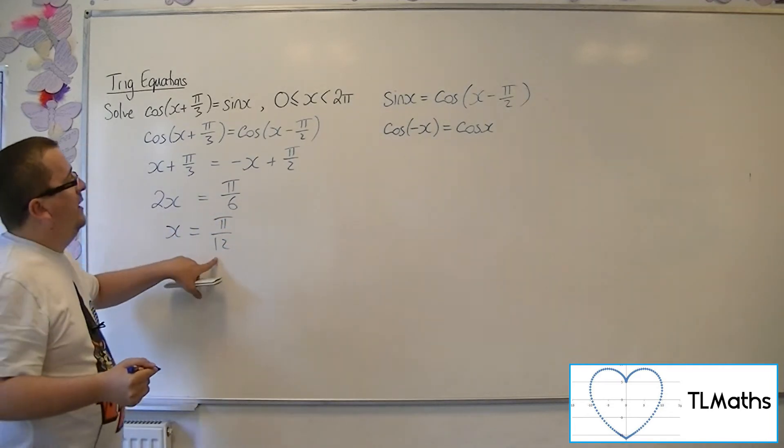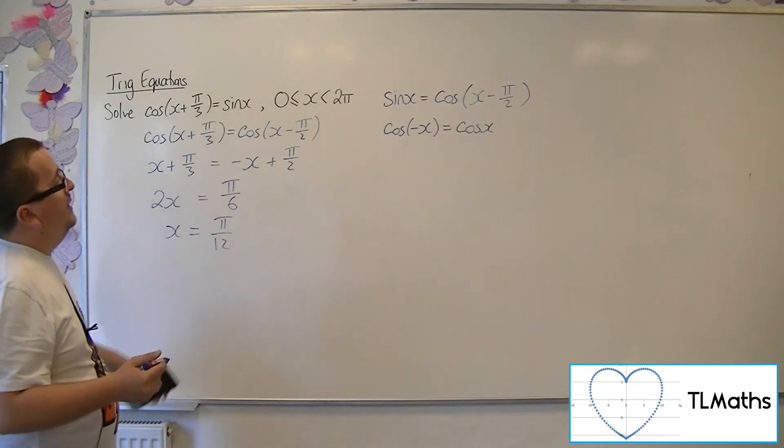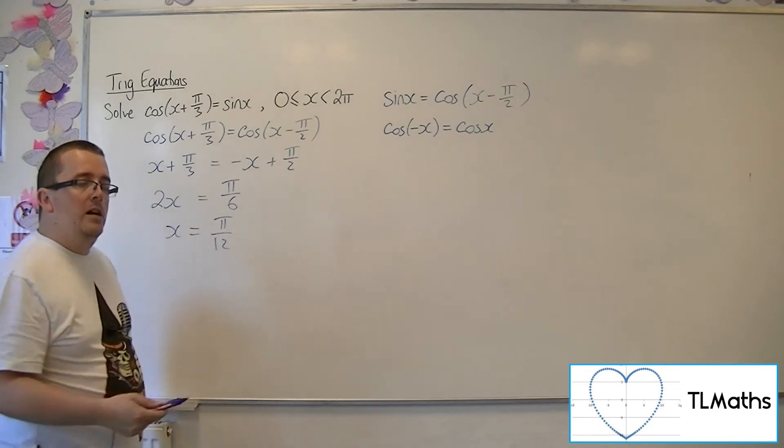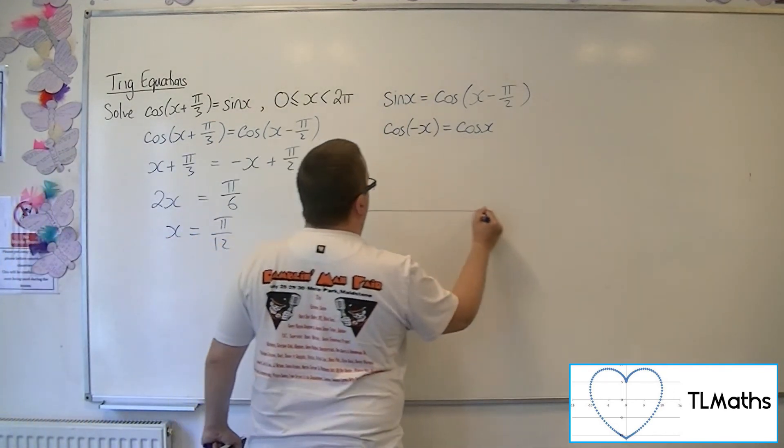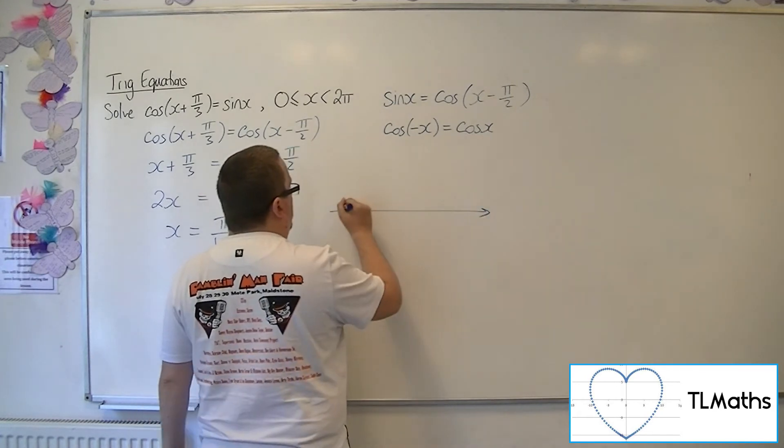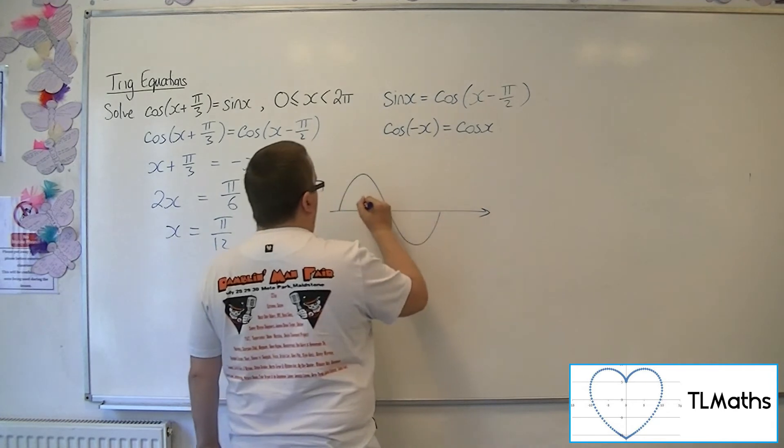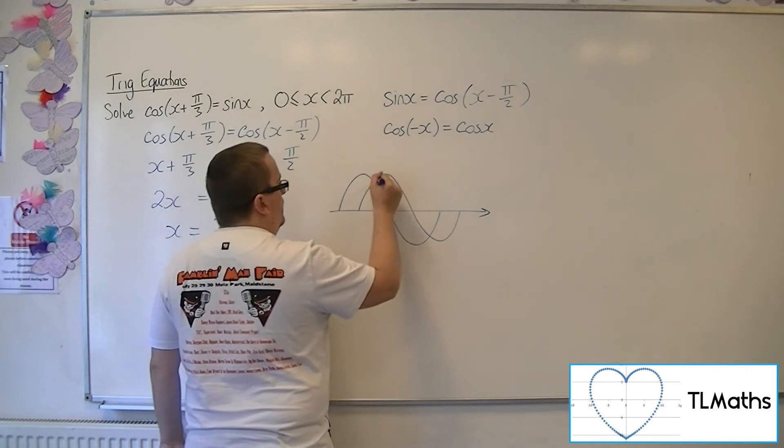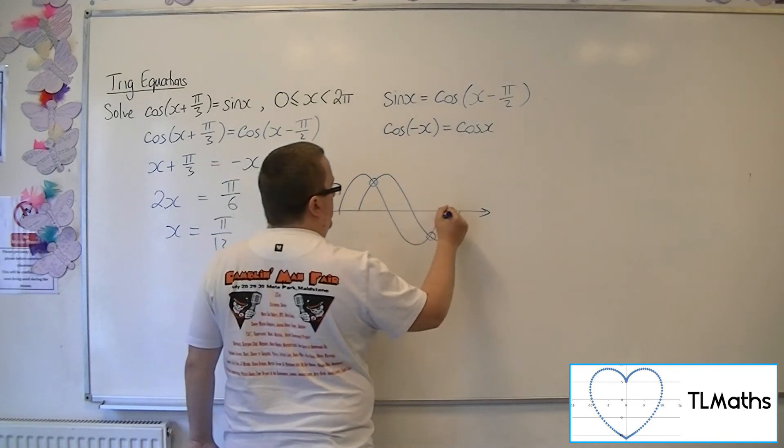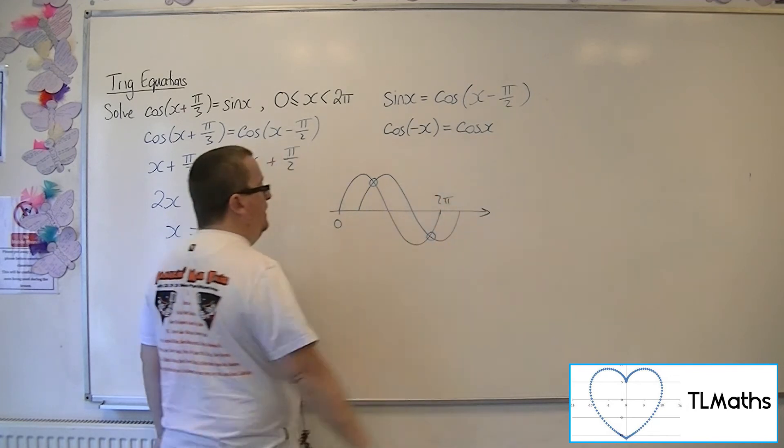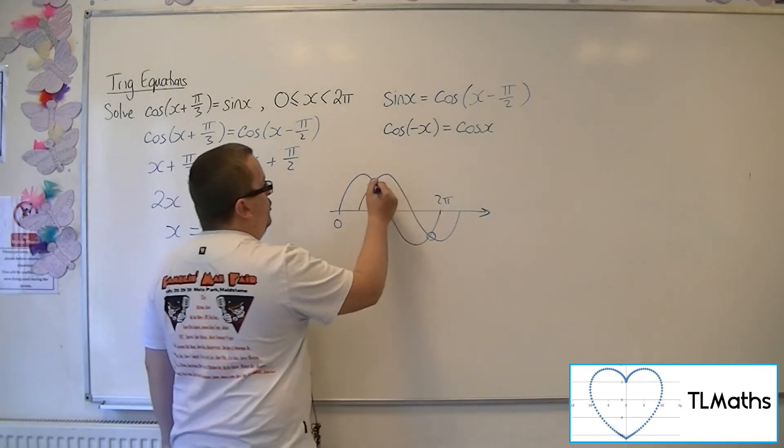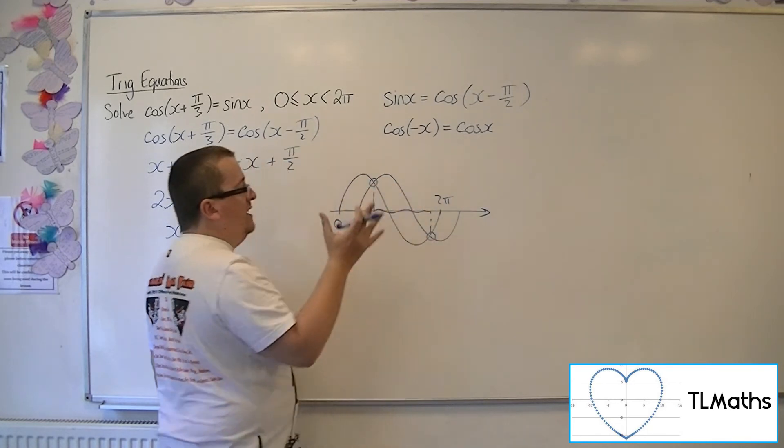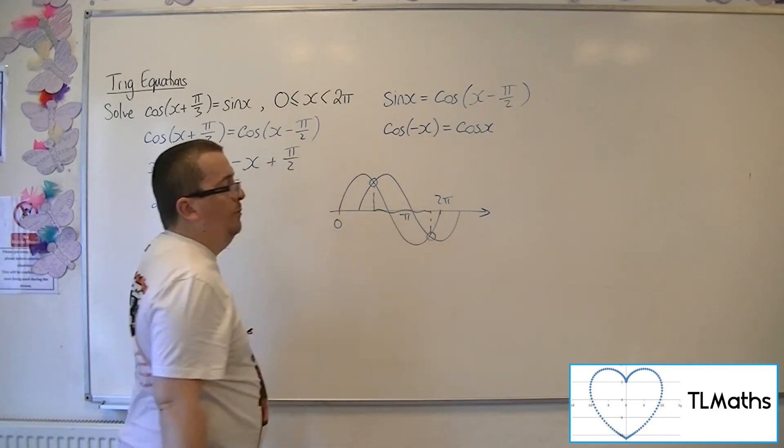Now that's not the only solution between 0 and 2 pi, because you've got two cosine curves effectively. If I just draw one next to the other, then there will be two intersection points between 0 and 2 pi. And these two solutions, because they will always be equidistant apart, will always be pi apart.